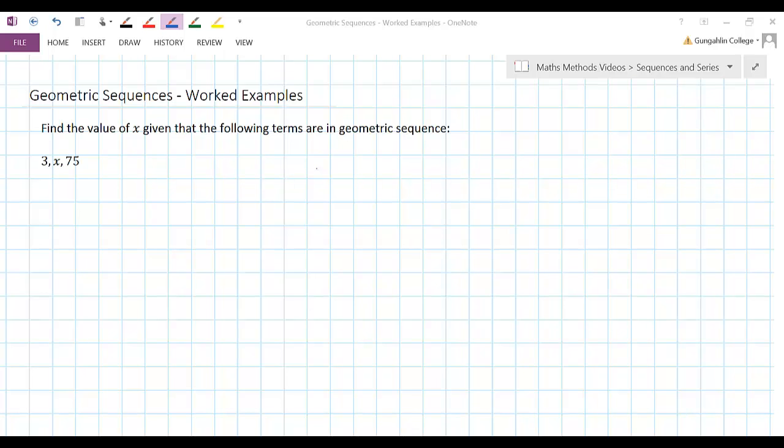In this second example we're told that we have three numbers here in geometric sequence and we're asked to find what that middle number, that x must be.